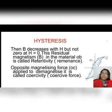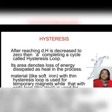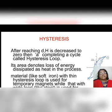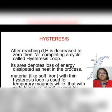Depending upon the nature of the hysteresis curve, we choose materials for making permanent and electromagnets. Materials with a thin hysteresis loop are used for temporary magnets, while those with a wide loop are used for permanent magnets.